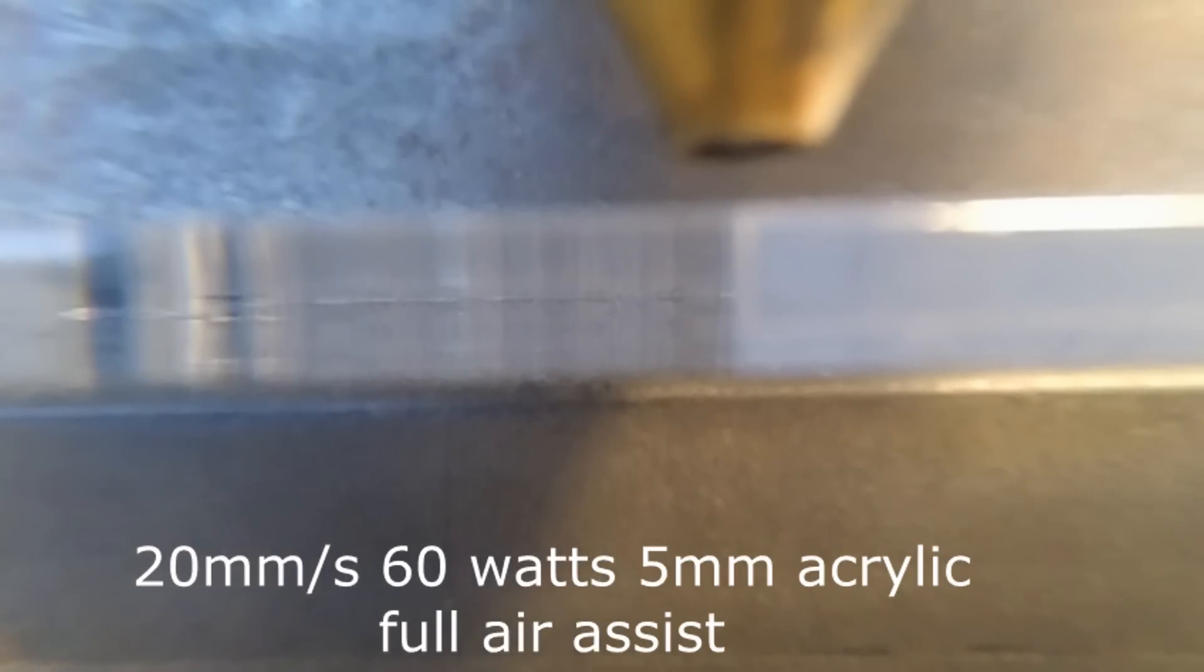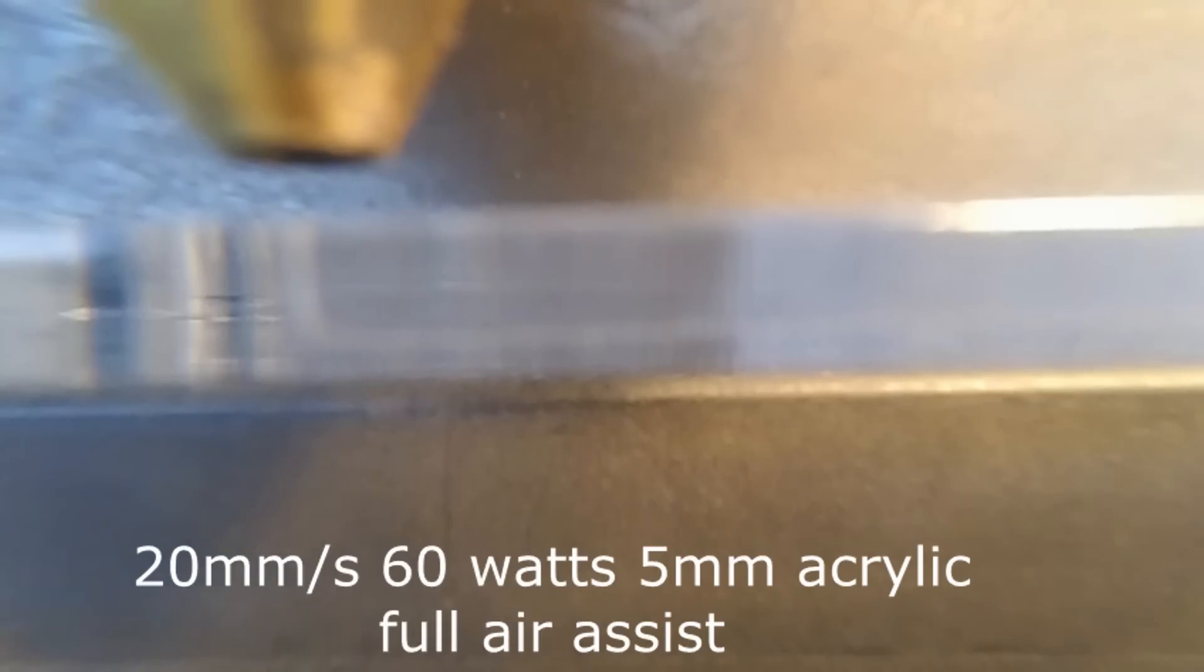Here we are, full air assist again but this time we've upped the speed to 20 millimeters a second so it's not going to cut through. I want you to look at the little white puffs occurring down at the actual bottom of the slot there. It's very turbulent down there and you can see the fumes are penetrating deeper and shallower and deeper and shallower. It's really quite an interesting pretty effect but no good for the surface finish of course.